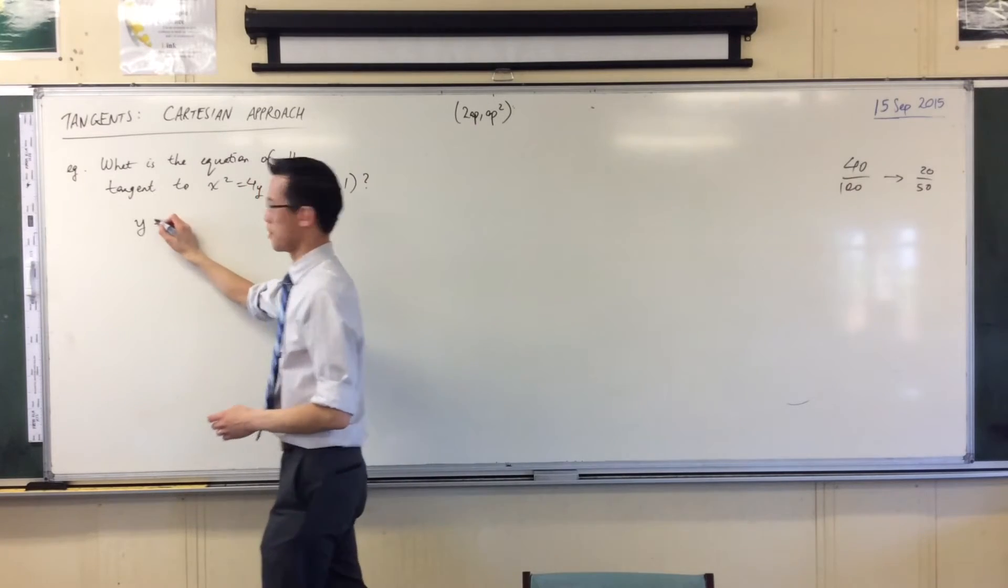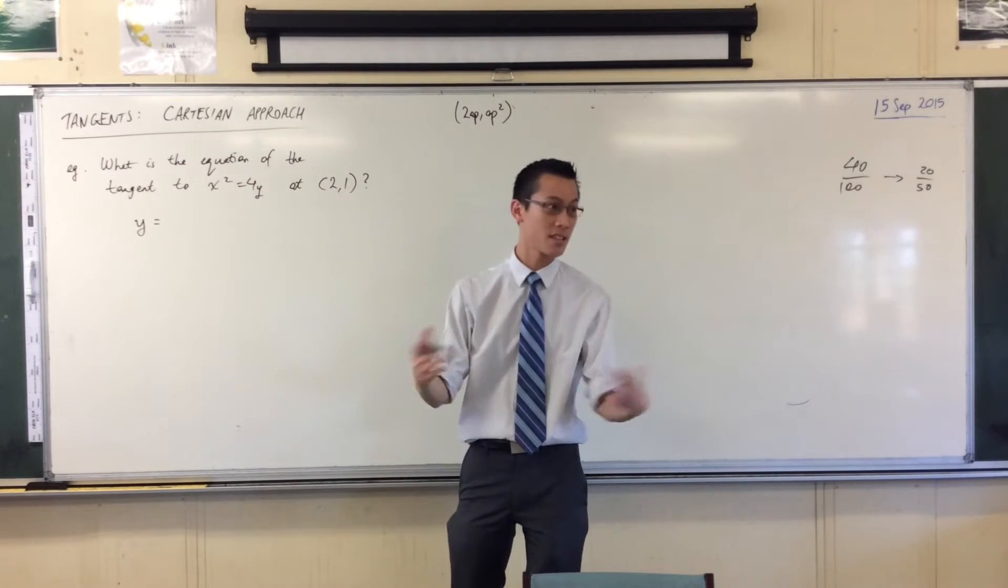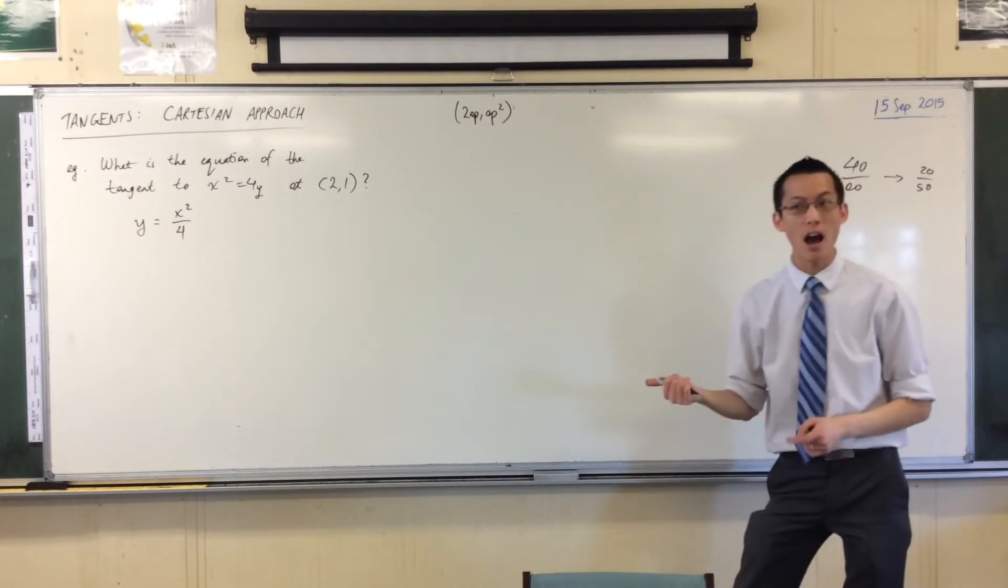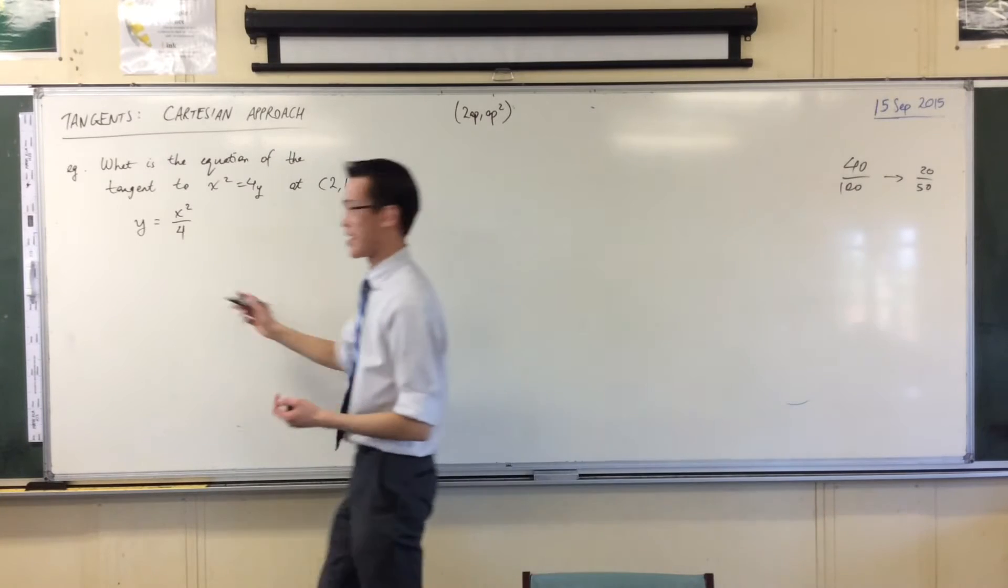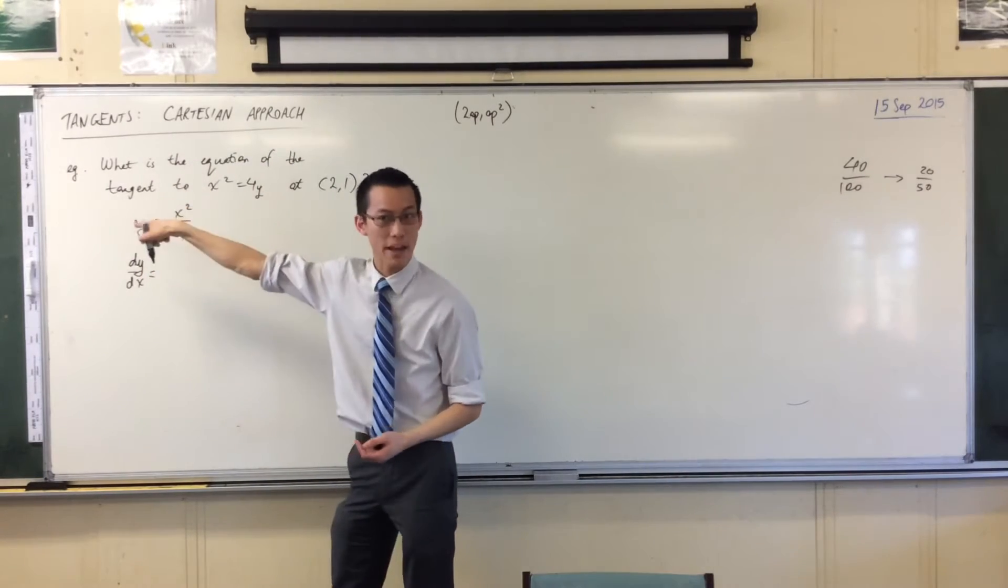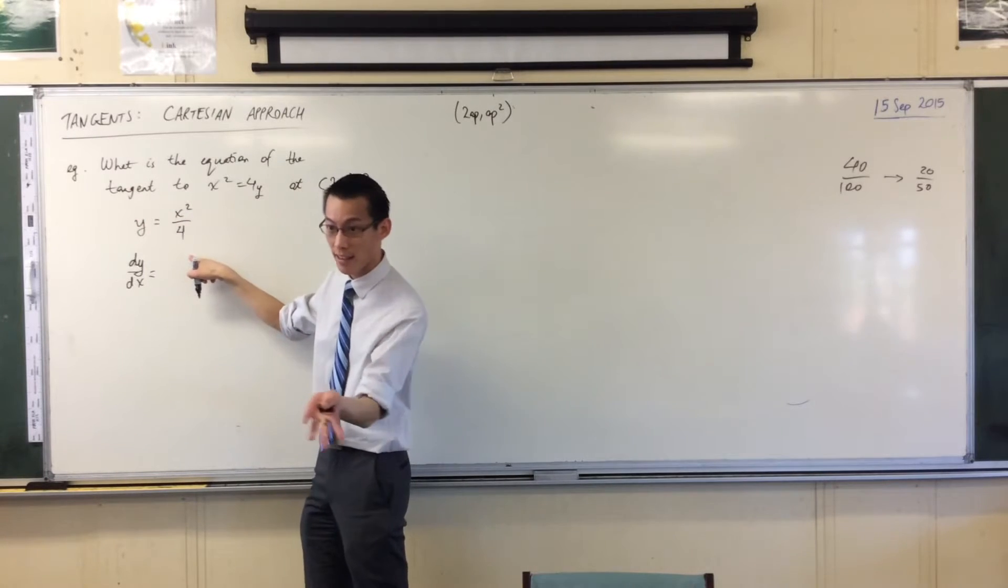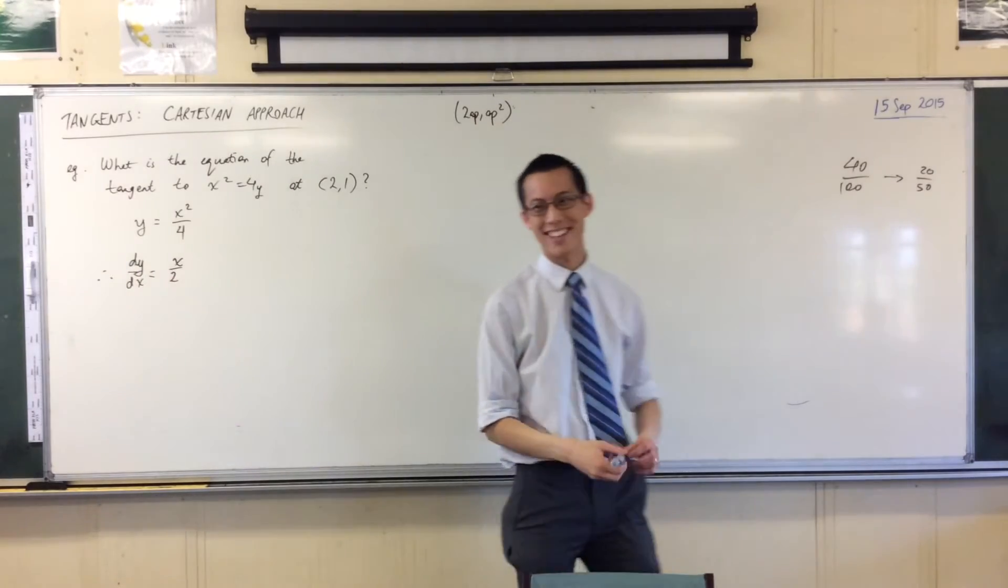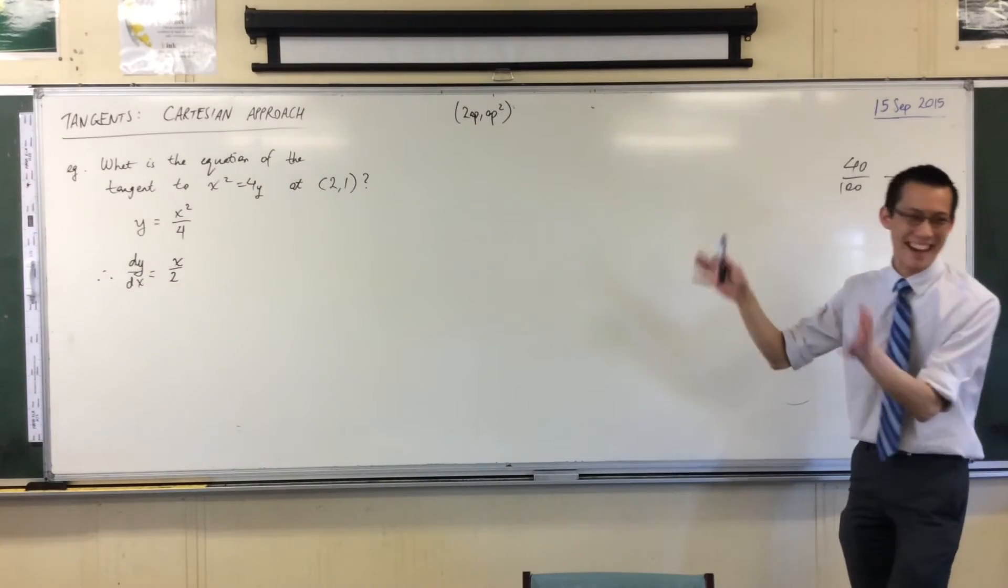Because then I can get dy/dx. So I'm going to write this, and from there I can differentiate. What's the derivative of this guy? X/2. Excellent. That 2 is going to come out the front, it's going to cancel partly with the 4, so I just get that. And you notice, I wrote dy/dx, not just equals.